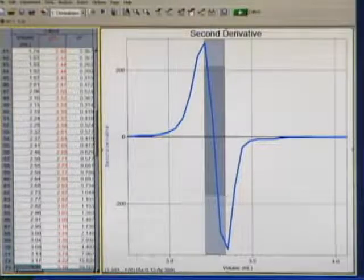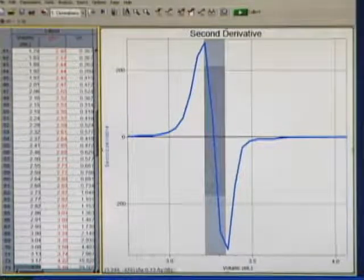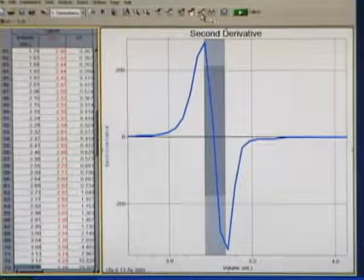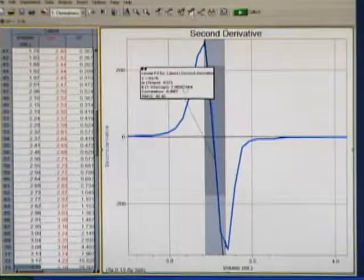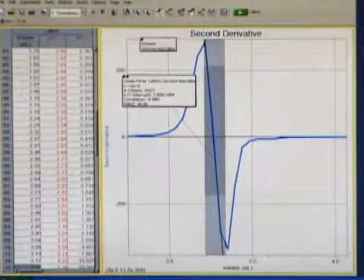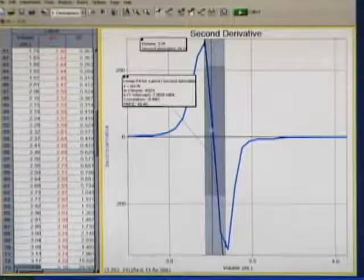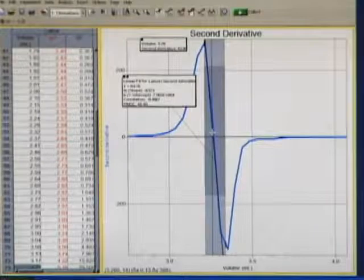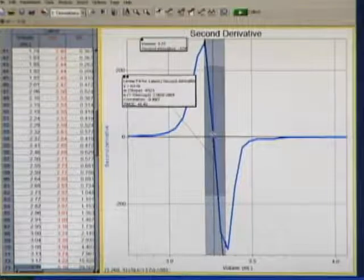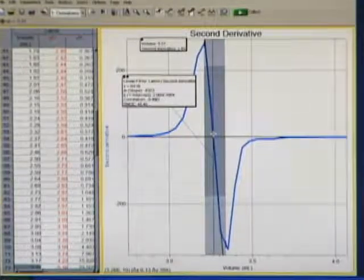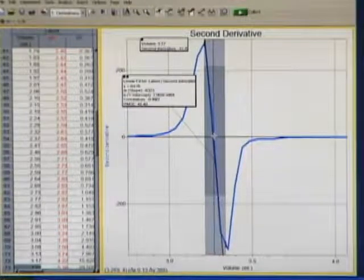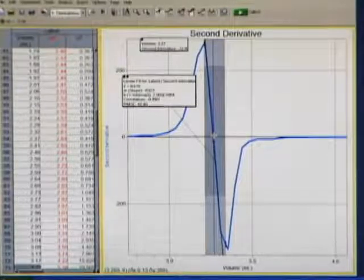I can then click on the linear regression button on the toolbar and it fits a line to that section. I then go to analyze and interpolate, which will interpolate along that curve fit line. And if I carefully move that around until my derivative is as close to zero as I can get it, right there my volume is 3.27. That is the best number we can get for the equivalence point of that titration.